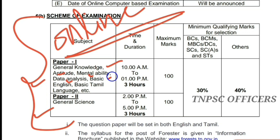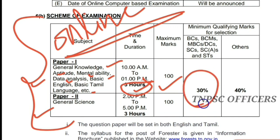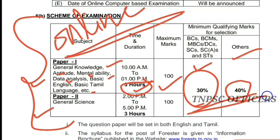Paper 1 also covers Basic English and Basic Tamil languages, and current affairs. The duration is 2 hours and the maximum marks are 100. The minimum pass marks — cut-off marks — are 30% for backward class and others, and 40% for general category.